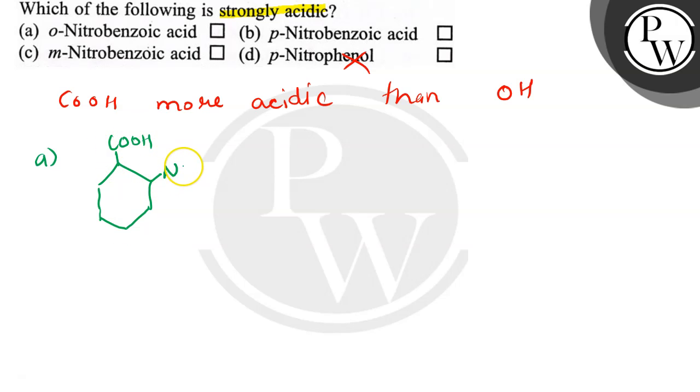And next we have para-nitrobenzoic acid, that is b, and nitro group on para position. Now lastly we have